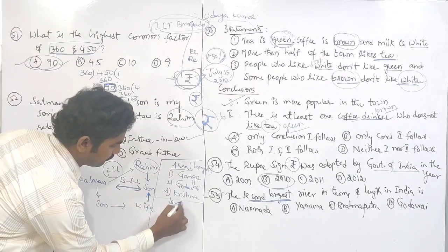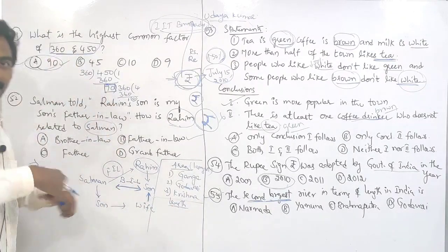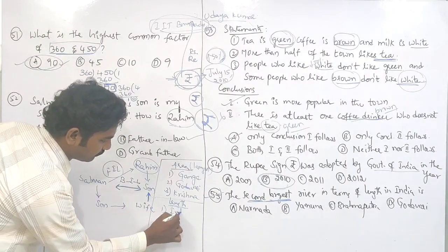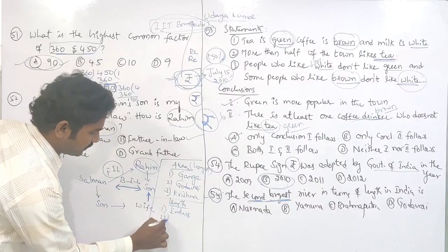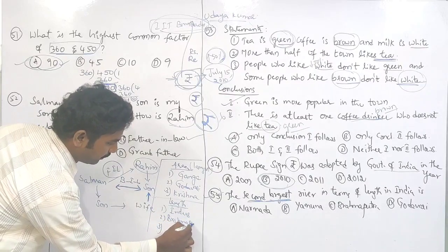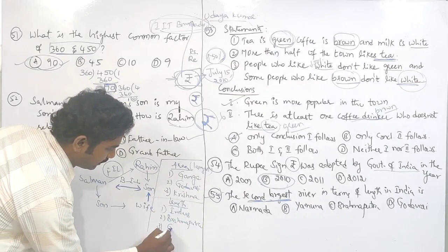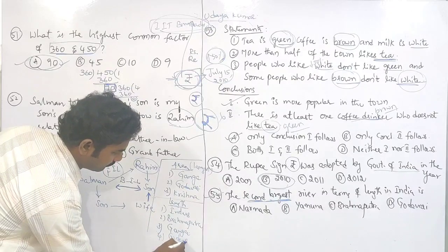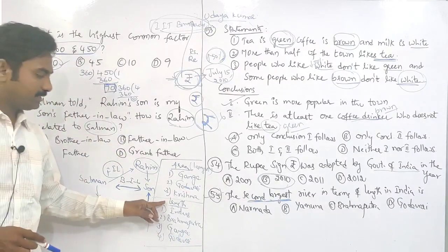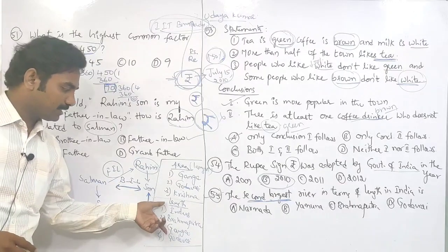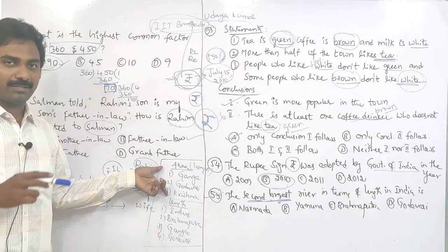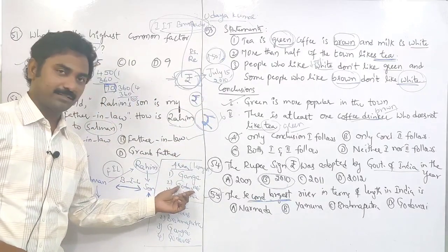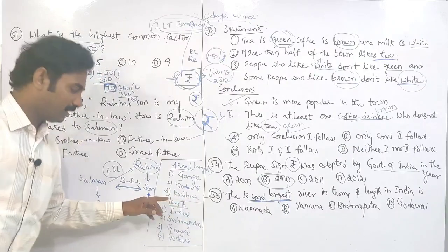Length-wise, the top rivers are: first is Indus, second is Brahmaputra, third is Ganga, and fourth is Godavari. These are called longest rivers; area-wise they are called largest rivers. Largest means area-wise — area-wise biggest is Ganga, second is Godavari, third is Krishna. Length-wise — longest — first is Indus, second is Brahmaputra, third Ganga, fourth Godavari.